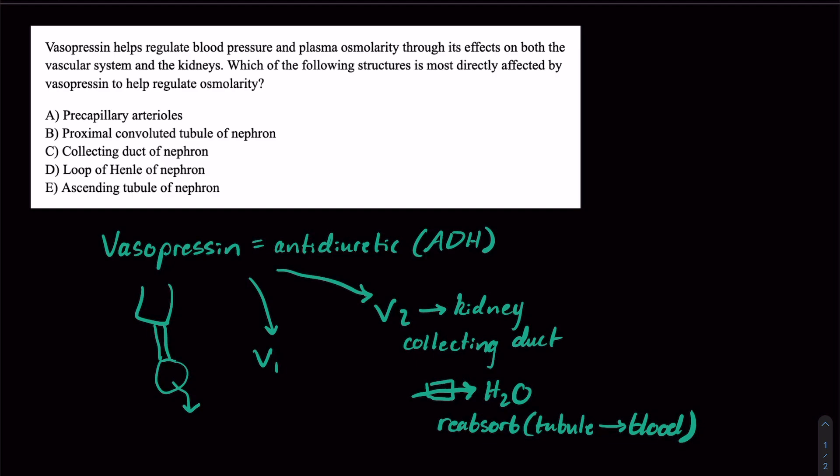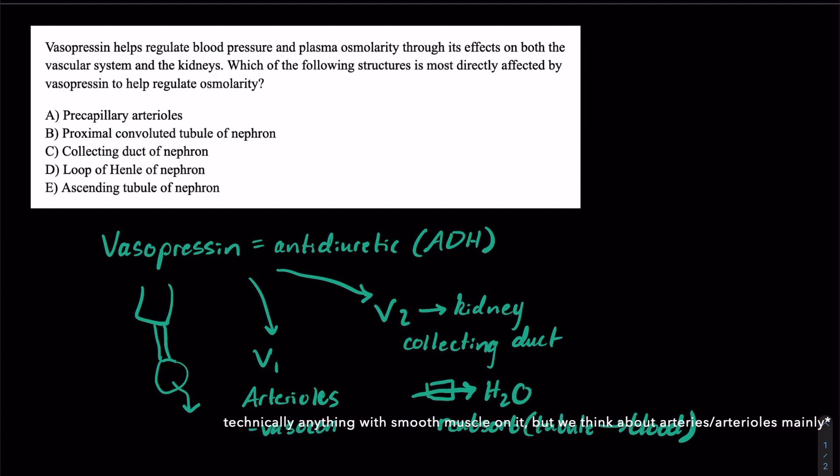Now the V1 receptors, on the other hand, are found in arterioles, and these help vasoconstrict. So ADH also has the potential to vasoconstrict the vessels.